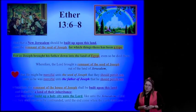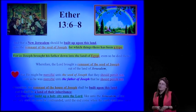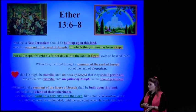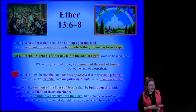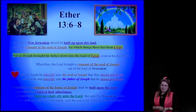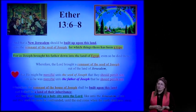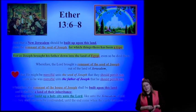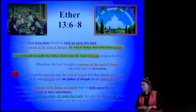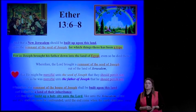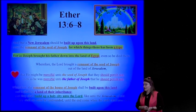'Even as God was merciful unto the father of Joseph, that he would perish not, wherefore the remnant of the house of Joseph shall be built upon this land, and it shall be a land of their inheritance. And they shall build up a holy city unto the Lord, like unto the Jerusalem of old, and they shall no more be confounded until the end come, when the earth shall pass away.' That's right back to Article of Faith number 10—that Zion, the New Jerusalem, will be built upon the American continent.